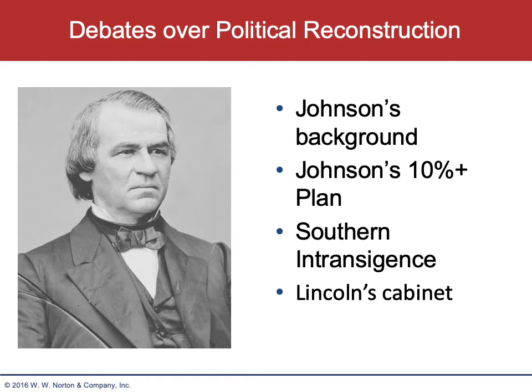These reconstructed states sent their delegates to Congress, many of whom were members of the Confederate Congress. Alexander Stephens, who was the vice president of the Confederacy, was actually elected as a member of the Georgia delegation. In absolute refusal, the Congress literally locked the doors of the Capitol building and refused to seat the delegates from the Southern states. This was going to create a huge face-off between the president and the radicals.